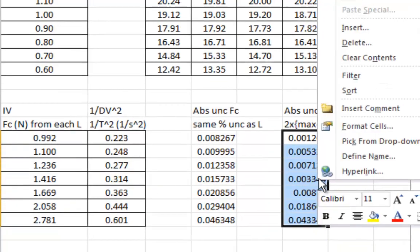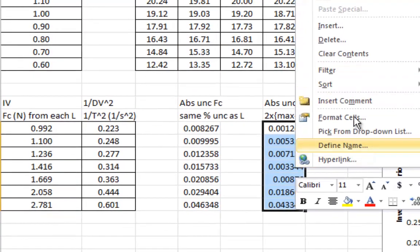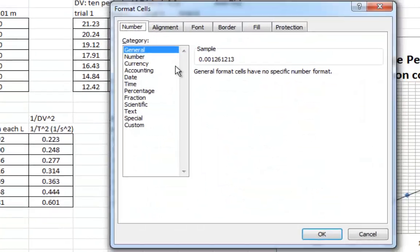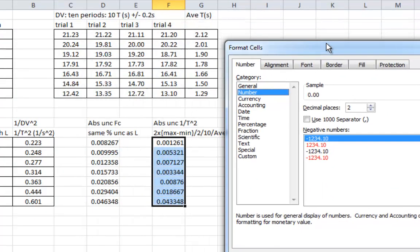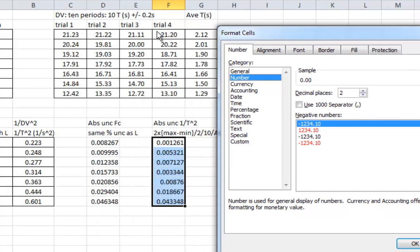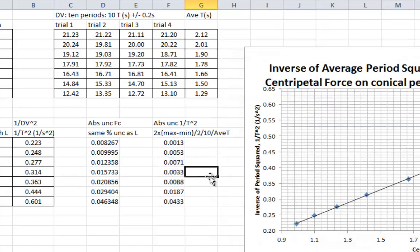So we'll do that really quickly. We can trim the numbers. So format cells. Change the number. These numbers came from values that had 4 sig figs. But they're uncertainties. So you probably want, let's say you want that many decimal places.